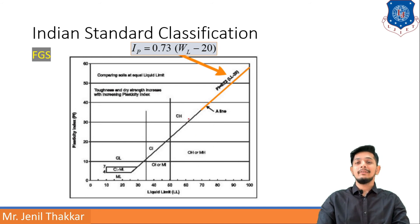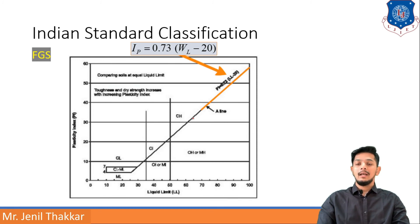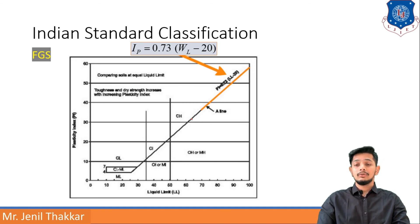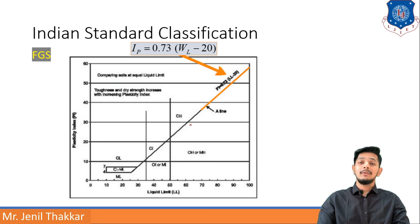To decide between CH and MH, use the A-line equation. If the soil's plasticity index value is above the A-line, it is CH (clay with high plasticity). If the PI value is at or below the A-line, it will be OH or MH — where OH is organic soil with high plasticity and MH is silt with high plasticity.